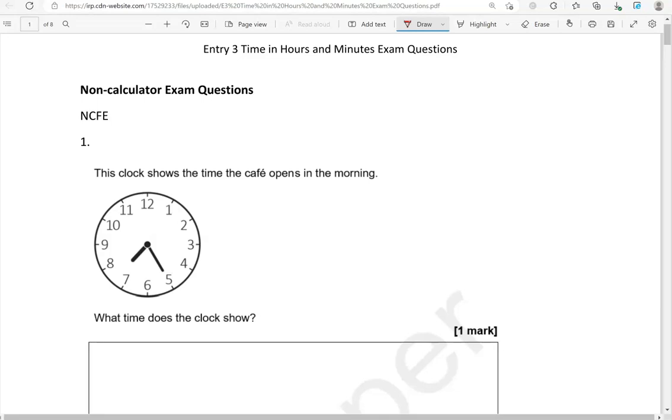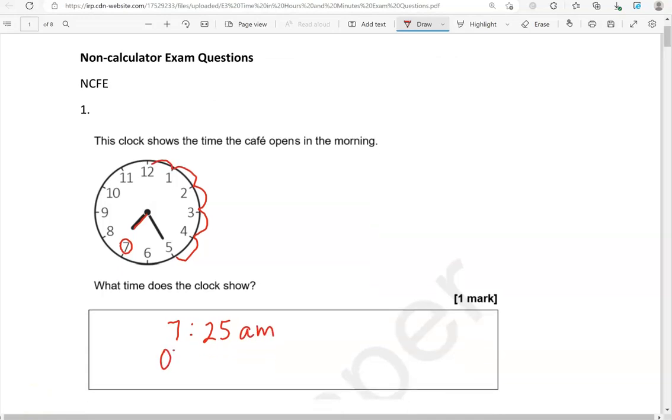Here is the first question. This clock shows the time the cafe opens in the morning. What time does the clock show? The short hand tells us the hours, so that's just past 7 but not 8 yet. So it's 7, and counting by fives: 5, 10, 15, 20, 25. So it's 7:25 in the morning, which is AM, or we could write it as 07:25 in 24-hour format, which means the same time.